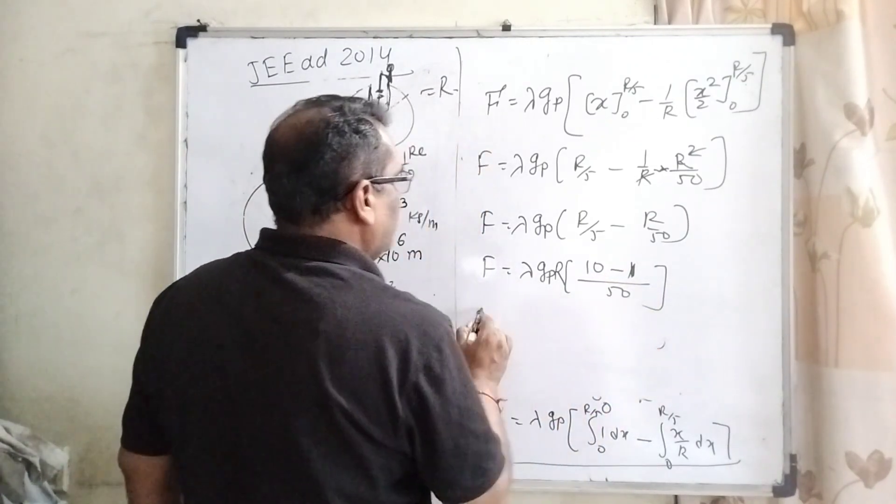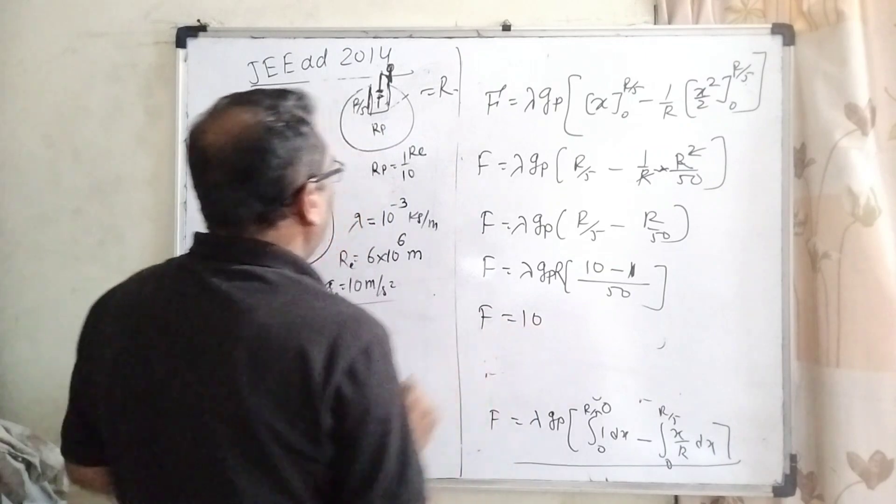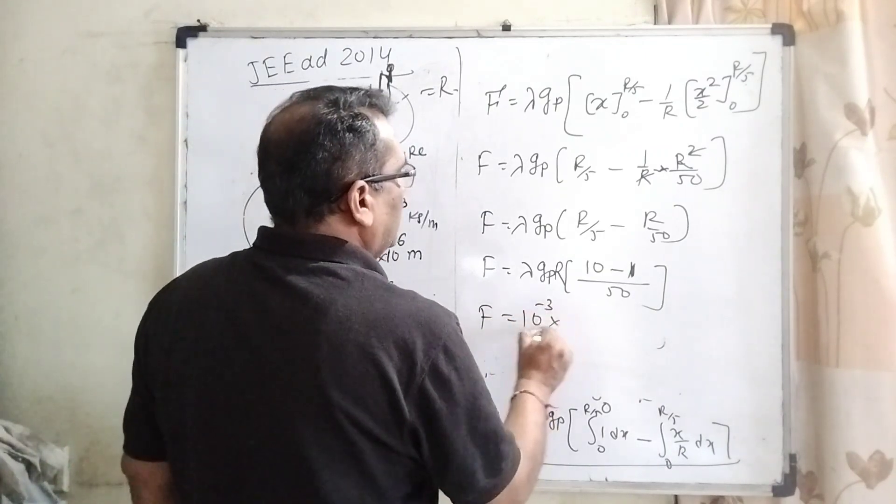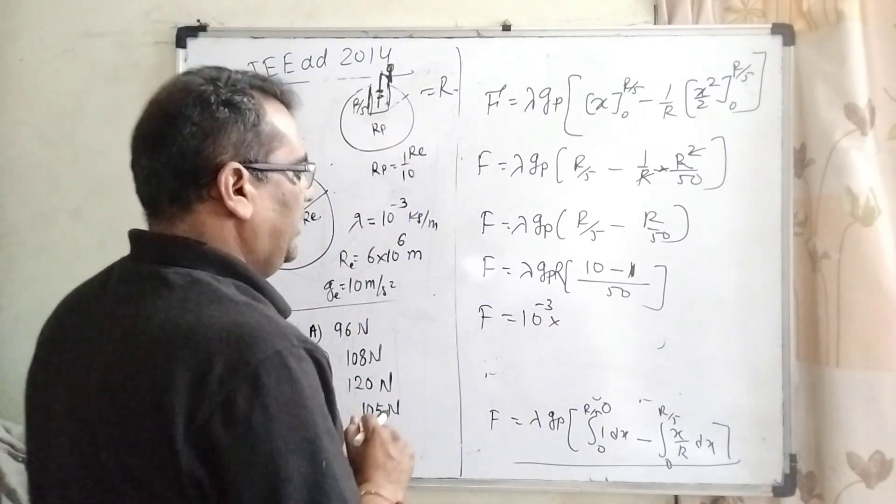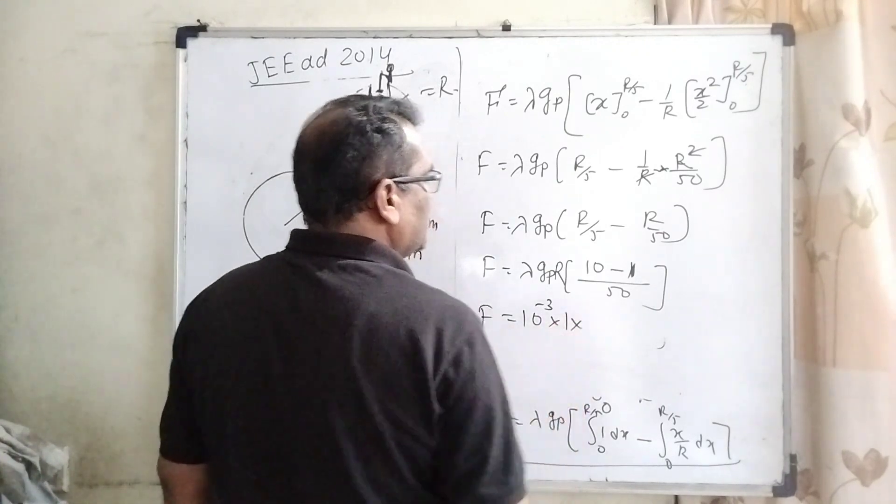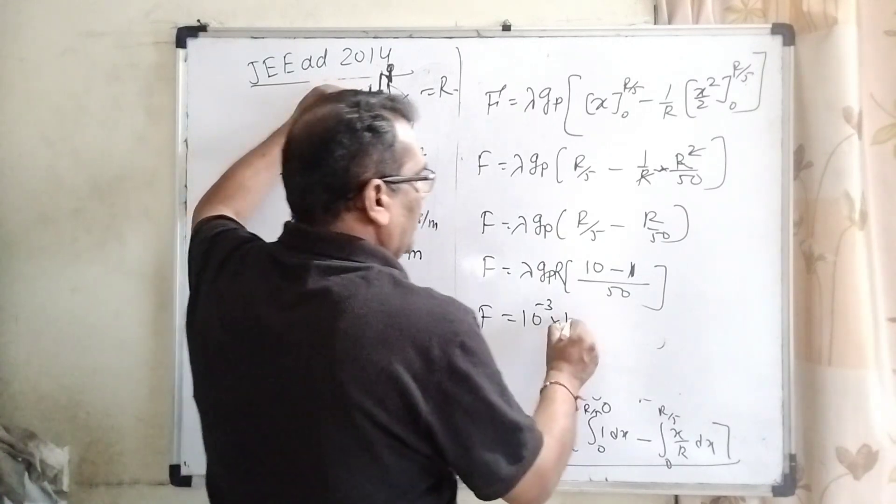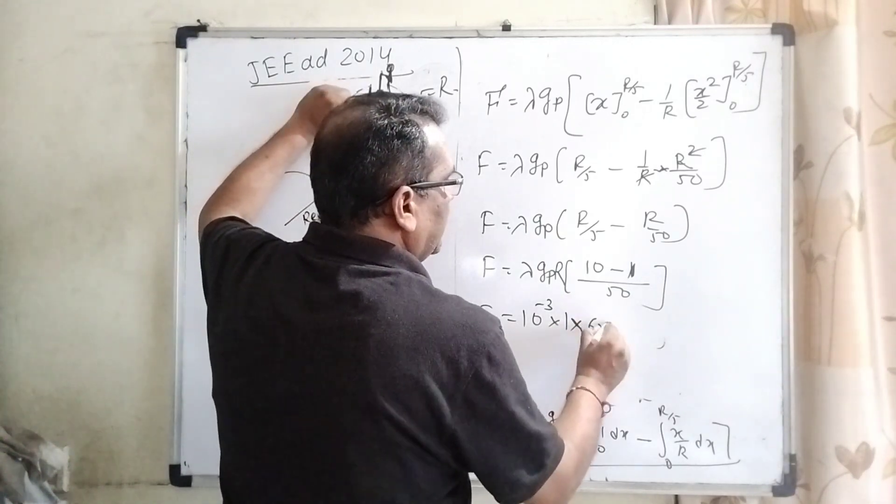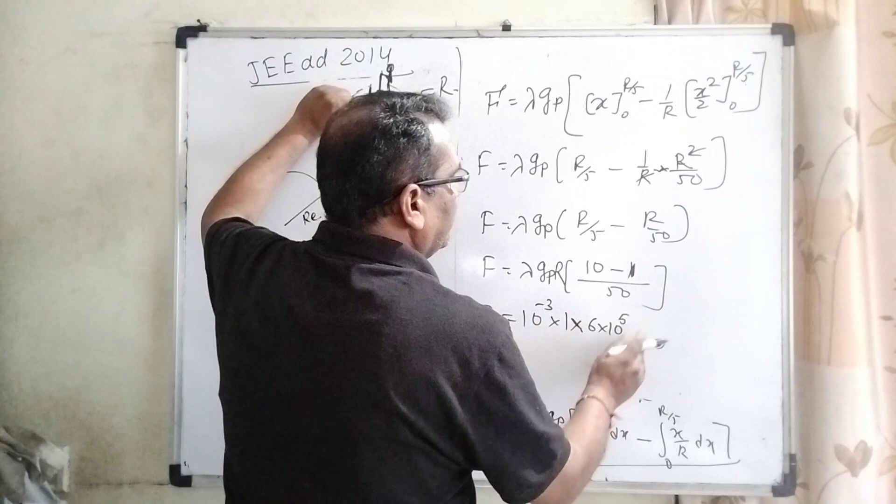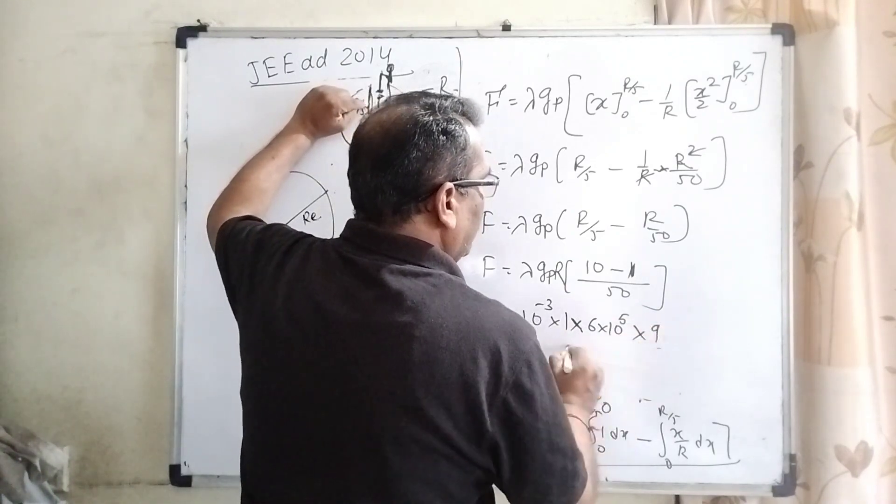Now, what is the value of lambda? 10 raised to power minus 3. What is gP? gP we have already found out, 1 meter per second square. What is R? R of planet. Here, 6 into 10 raised to power 5, 9 by 50.